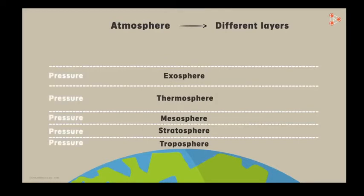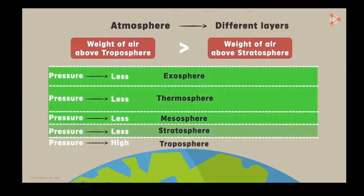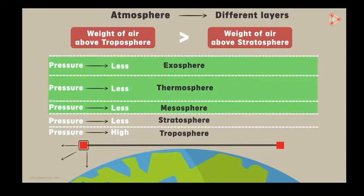The pressure in the troposphere, which is the bottom-most layer, is higher than the pressure in the layers above it. This is because the weight of the air above the troposphere is greater than the weight of the air above, say, the stratosphere. Air pressure also acts in every direction, and the air pressure at a particular height above the earth's surface is the same in all directions at equal altitudes.